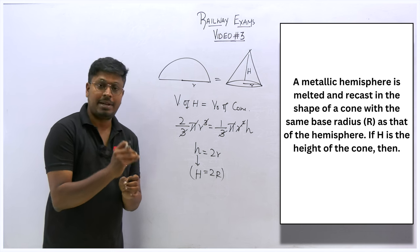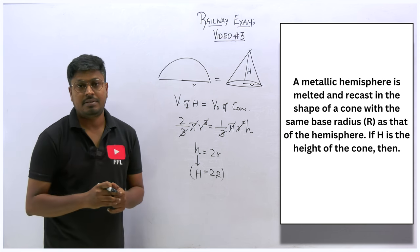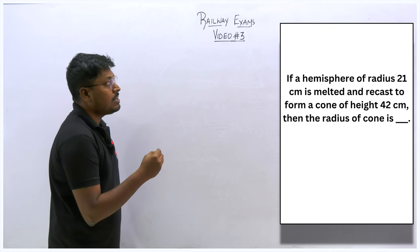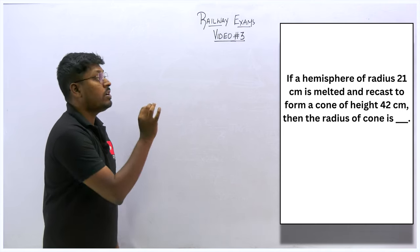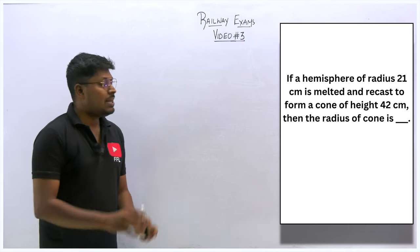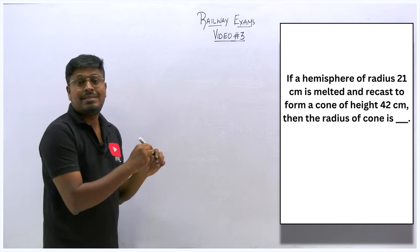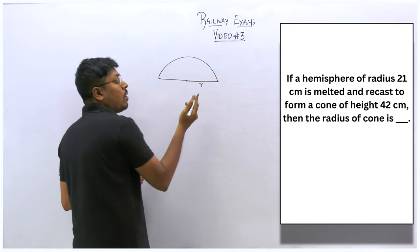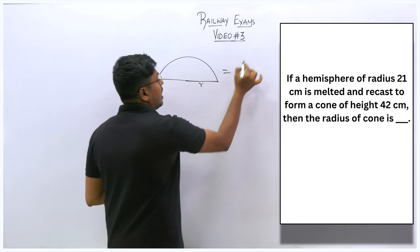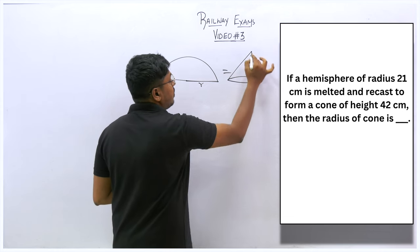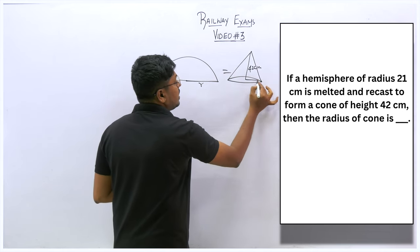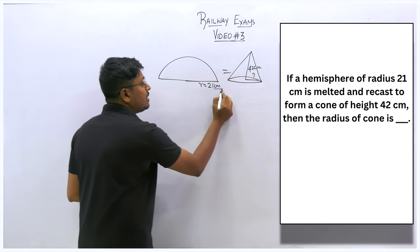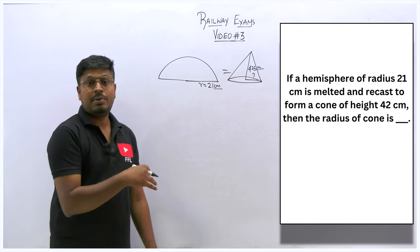Always remember: for melting concept questions, equate both volumes. Second question: a hemisphere of radius 21 cm is melted and recast into a cone with height 42 cm. Find the radius of the cone. The hemisphere radius is 21 cm and our target is to find the cone radius.